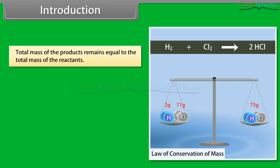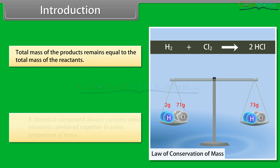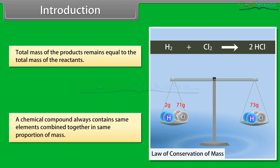The total mass of the products remains equal to the total mass of the reactants. For example, H₂ plus Cl₂ gives 2HCl. A chemical compound always contains the same elements combined together in the same proportion of mass.